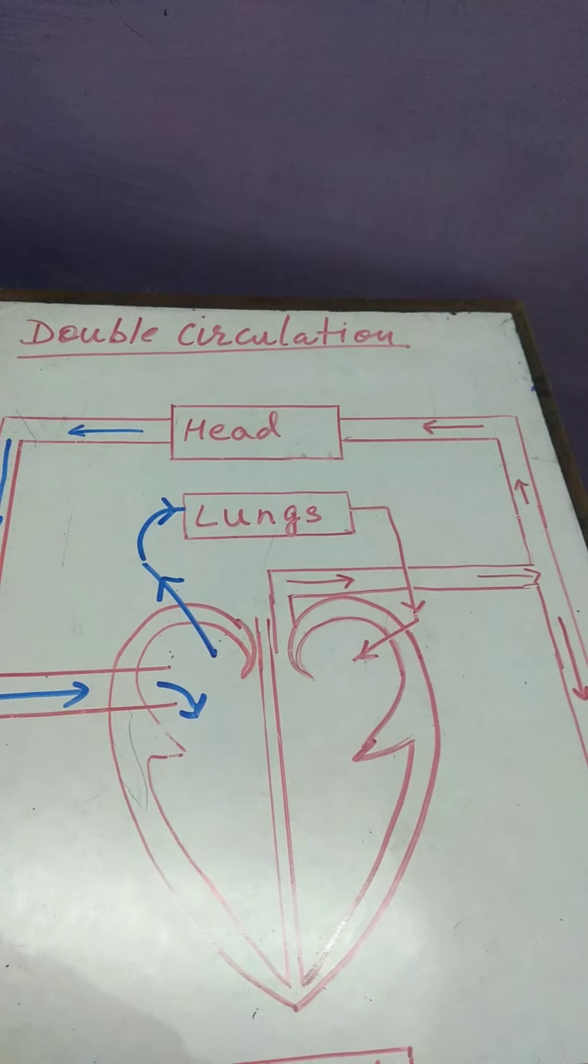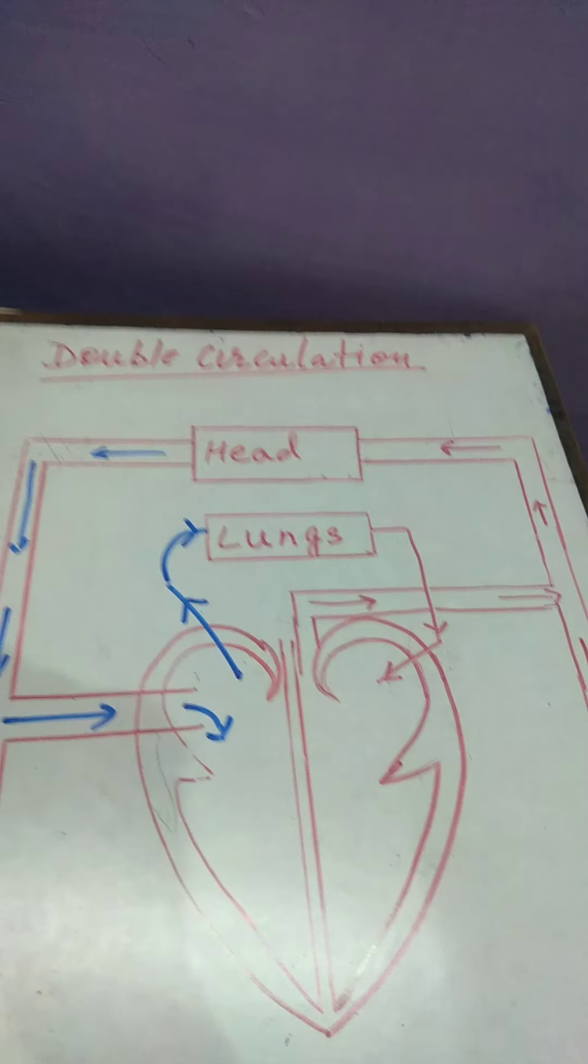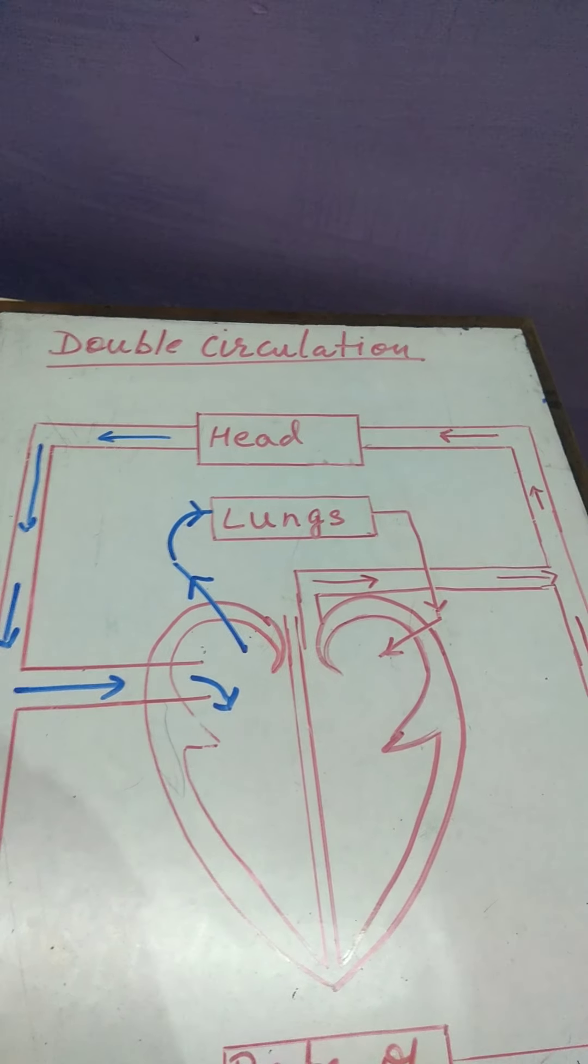Now, what do you mean by double circulation? See, it means twice the circulation of blood is taking place. Now, how is it possible?